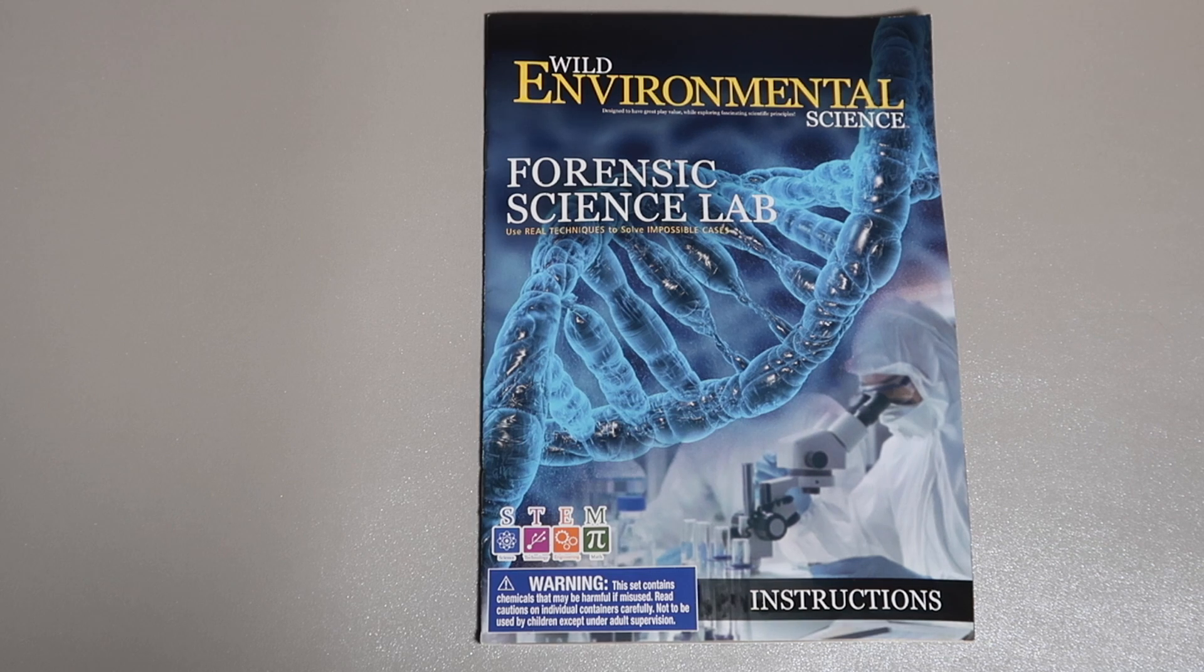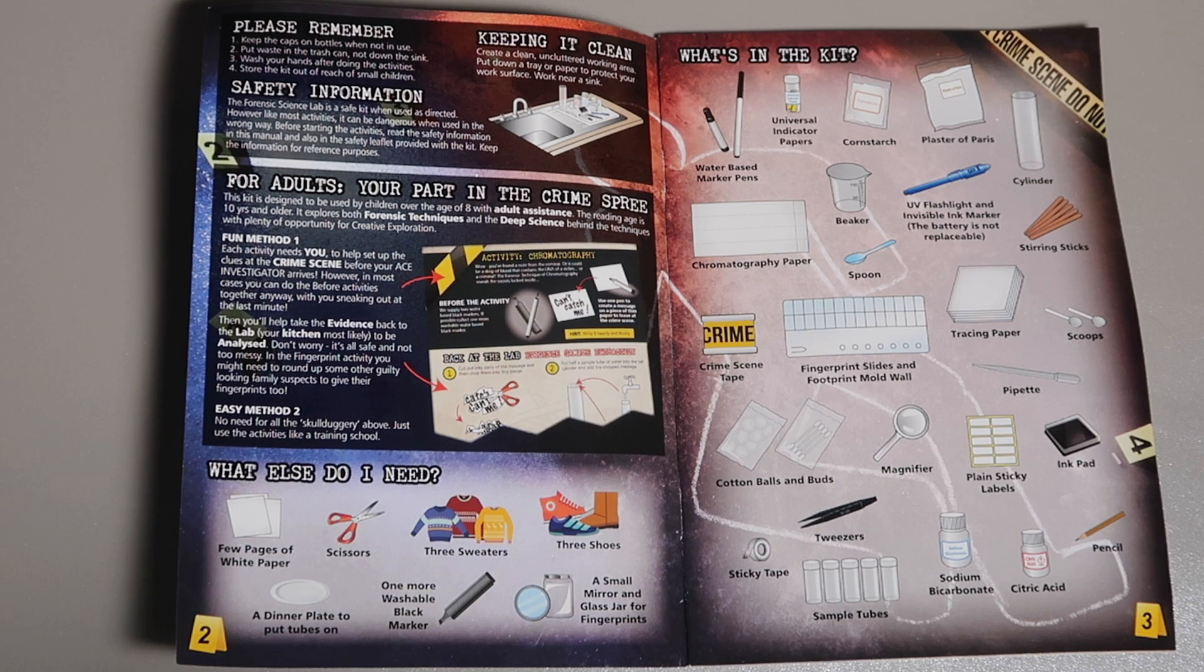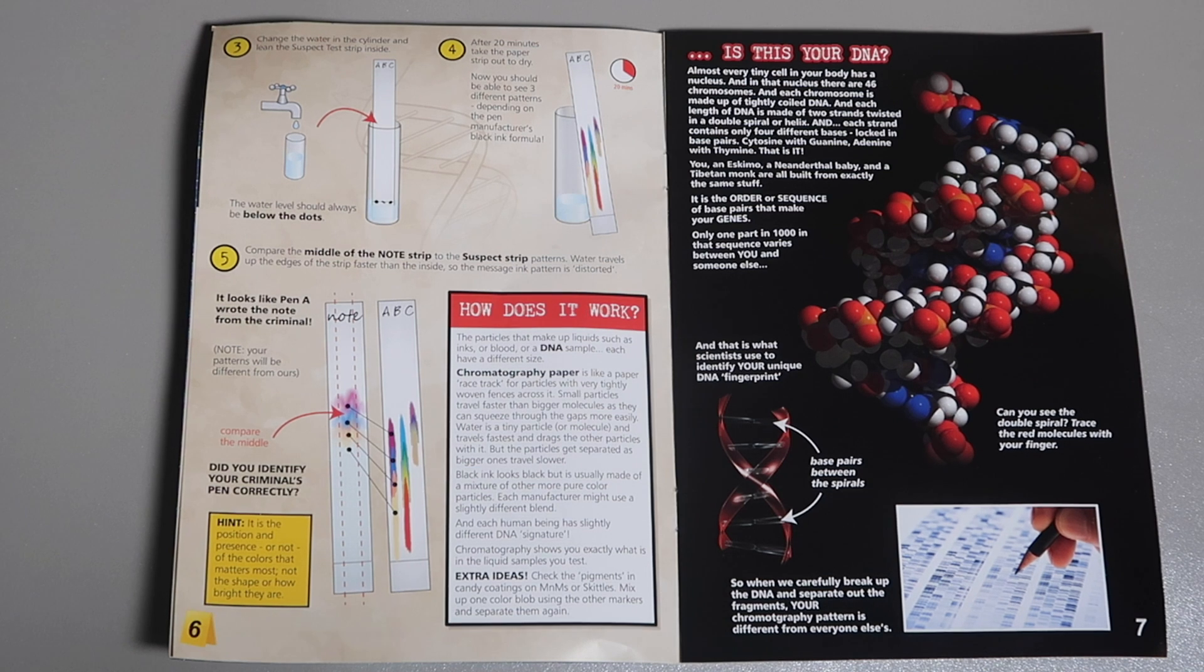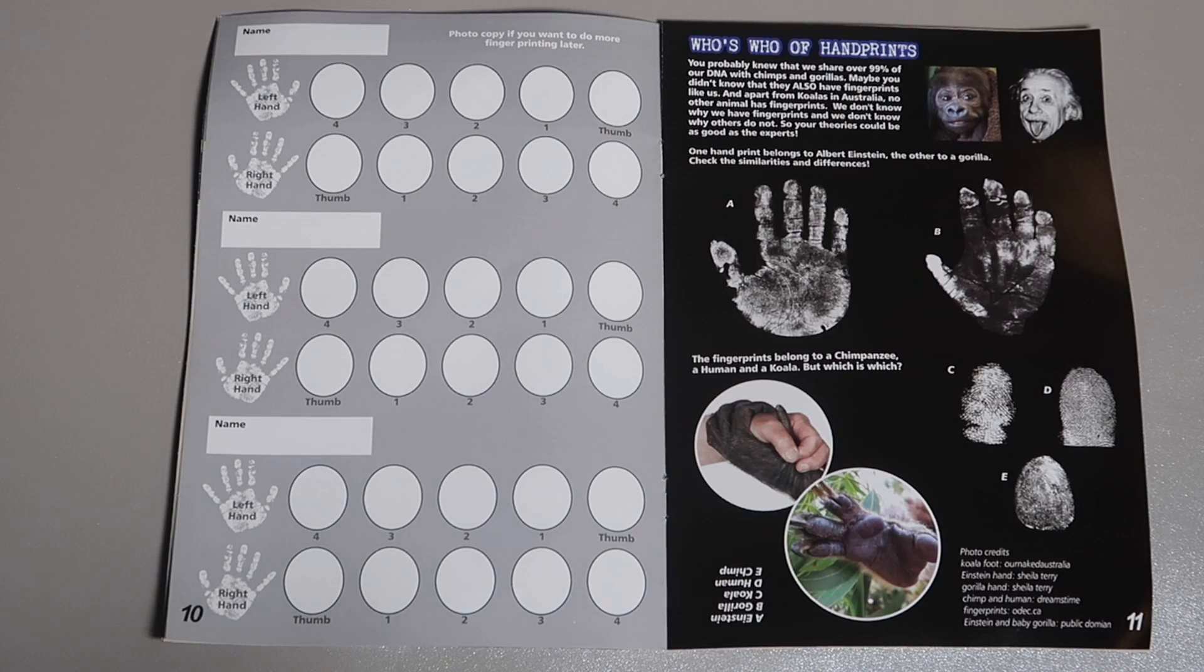Let's pop the lid open and take a look. The instruction manual is very clearly laid out. There's seven or eight different activities. Each activity is divided into three sections. One explains the science behind the activity, such as how fingerprints work or DNA analysis.